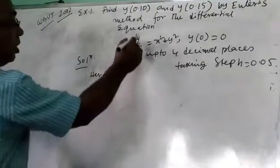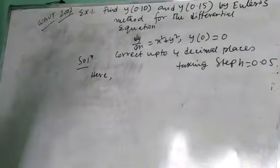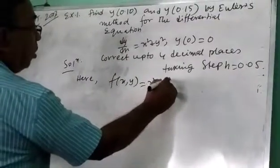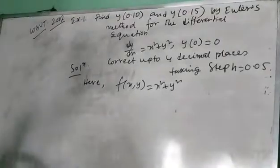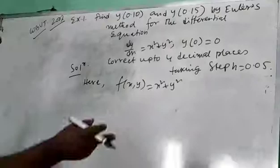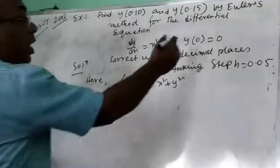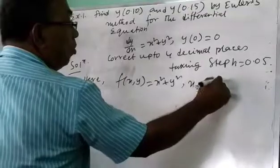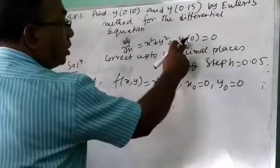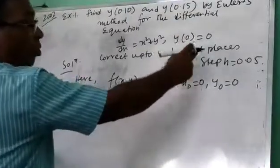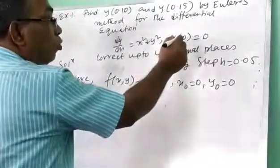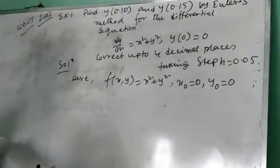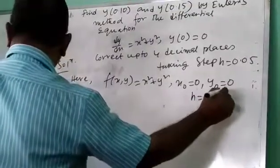Solution. Here, dy/dx equal to x² plus y², so this is your f(x,y). Therefore f(x,y) equal to x² plus y². Now, y(0) equal to 0, so we have x0 equal to 0, y0 equal to 0. And it is given h equal to 0.05.